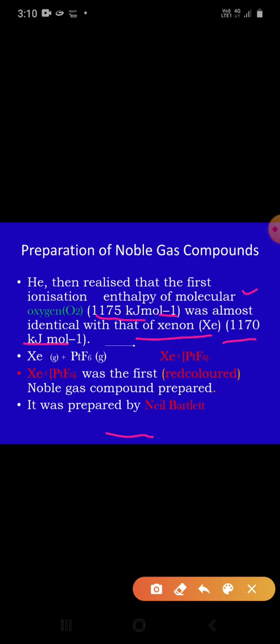He thought, if oxygen could form the compound red color compound, then why can't this xenon be? So he reacted xenon gas with PtF6 and it gave the compound xenon+ PtF6-.